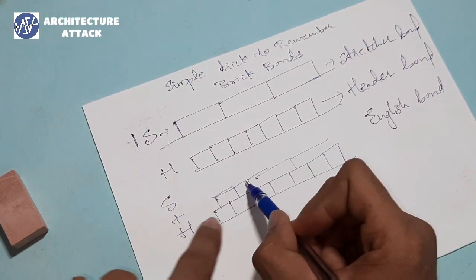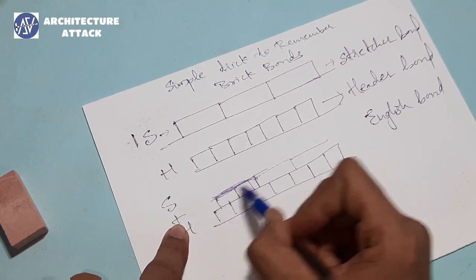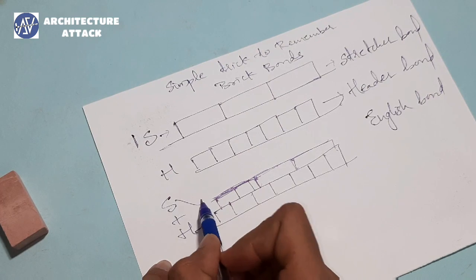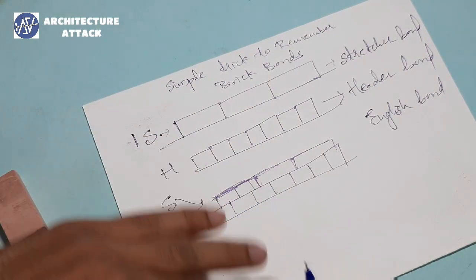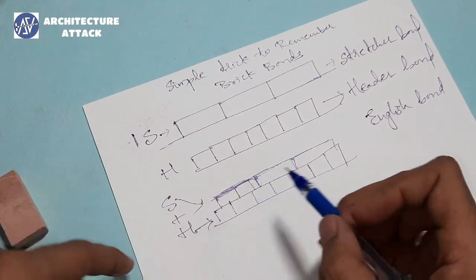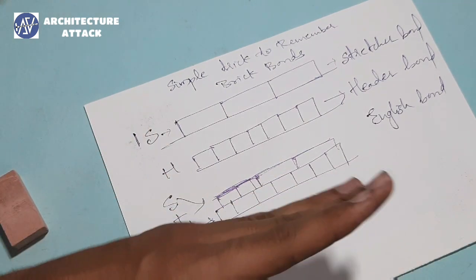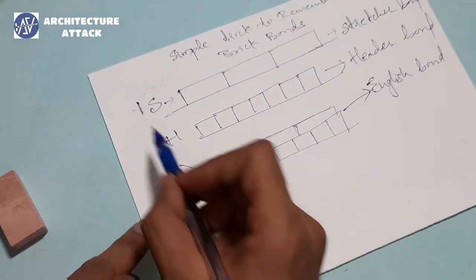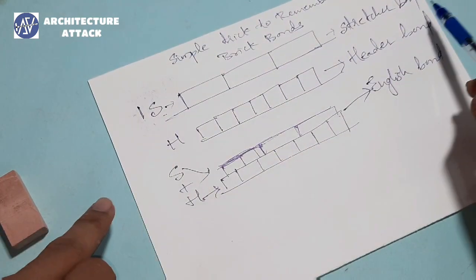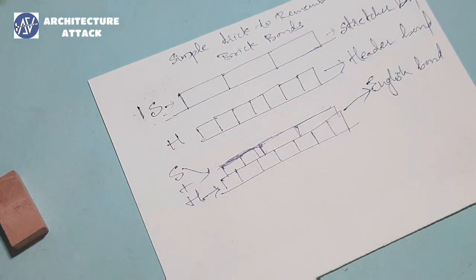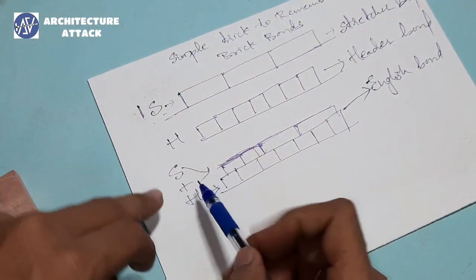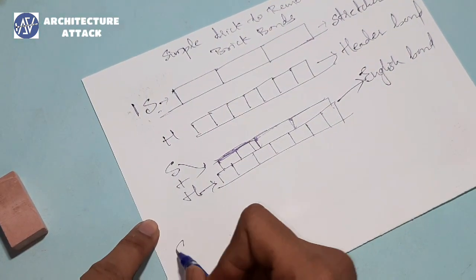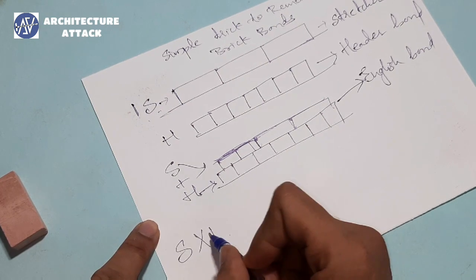like one layer is of header and one layer is of stretcher — it may be opposite, like the bottom layer is stretcher and top layer is header — if we are seeing one layer of header and one layer of stretcher, then it's English bond. S is stretcher, H is header: stretcher plus header equals English bond.